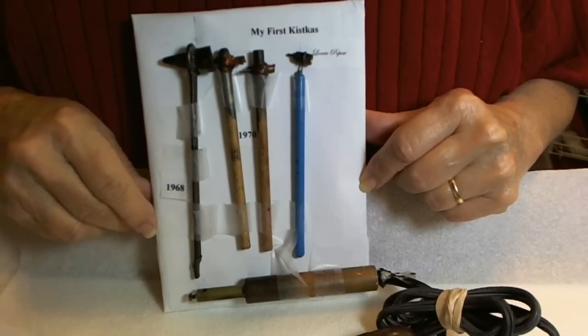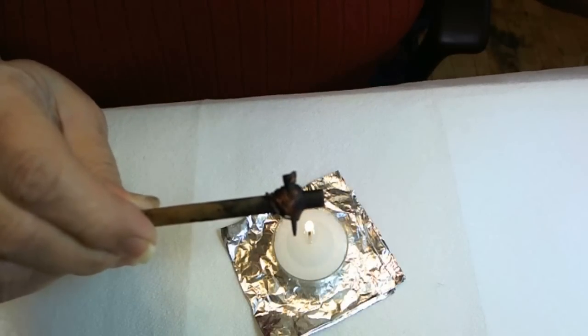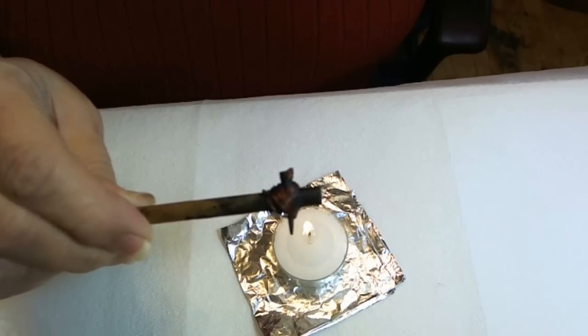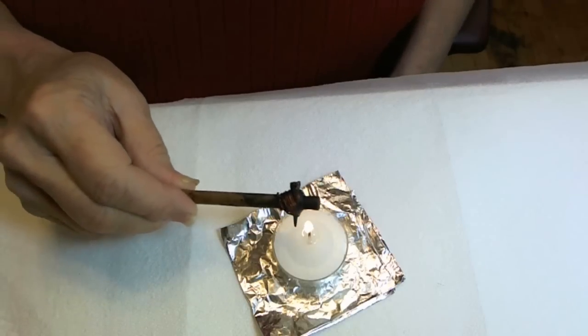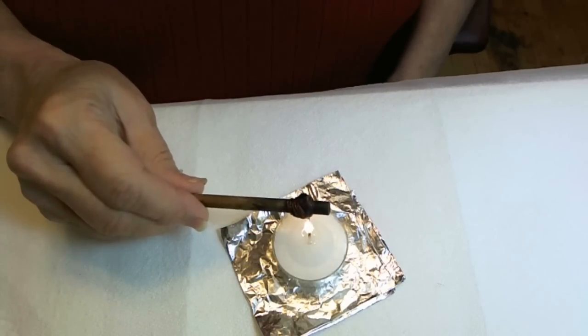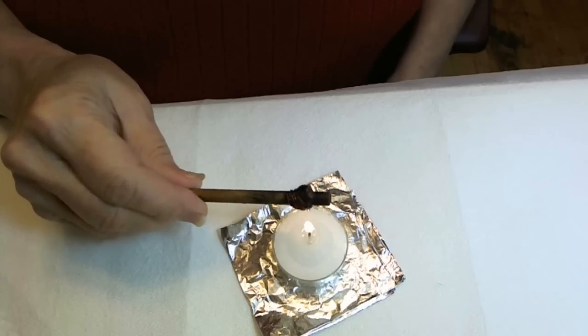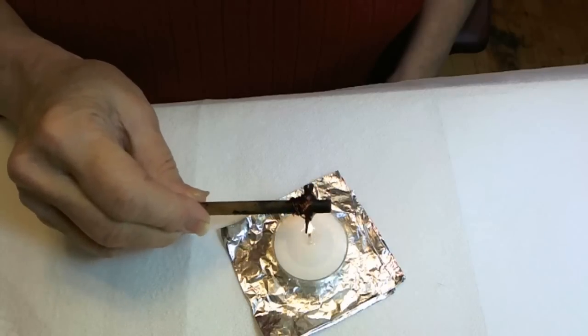These are my first ones. This is a traditional kiska made with metal and wood. These are the least expensive ones and need to be heated in a candle flame to get it nice and hot to melt the beeswax. When we hold it, we put the funnel near the flame. We don't put the wood part in the flame, but just the metal part. We're just trying to get this very hot.